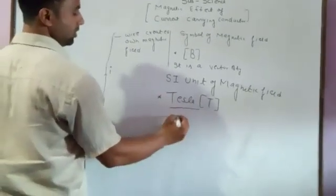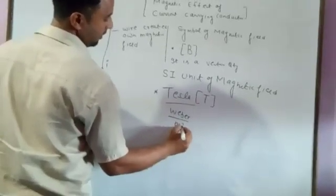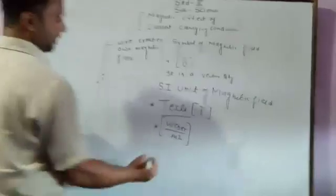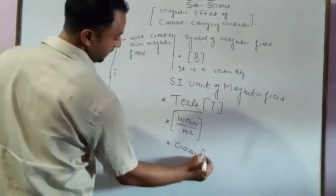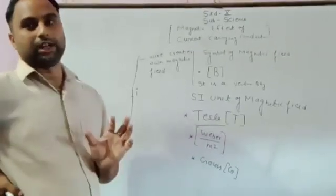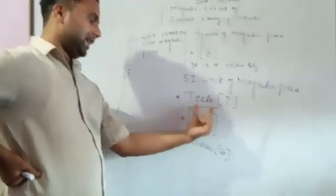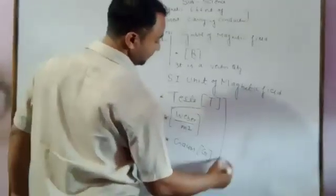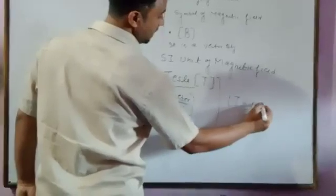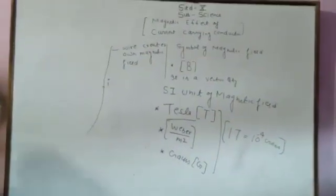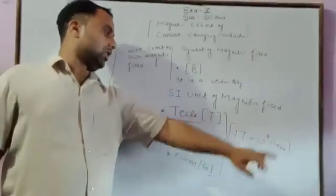Another SI unit of magnetic field is Weber per meter square (Wb/m²). There is also the CGS unit, which is Gauss, represented as G. The conversion factor is: one Tesla is equal to 10 to the power 4 Gauss.